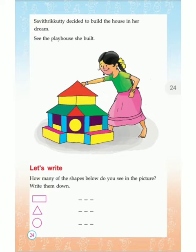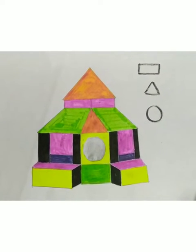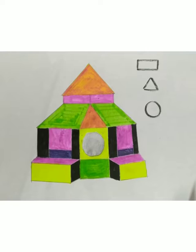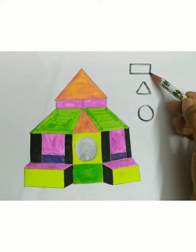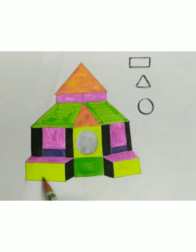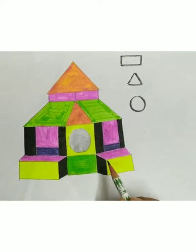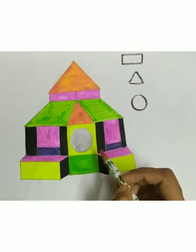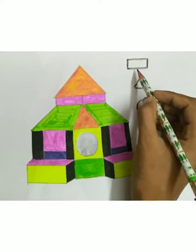Savitrikuti is going to build a house in her dream. You can see a house in the picture. Now I will show you a similar house. In this house, what can you see? There are some shapes — this shape, this shape, another shape, another shape. These shapes are called rectangles.